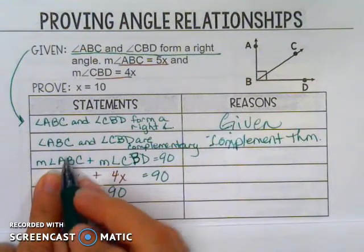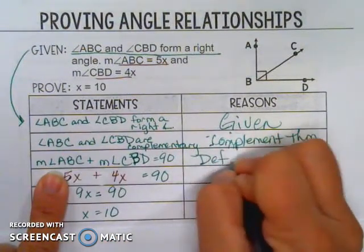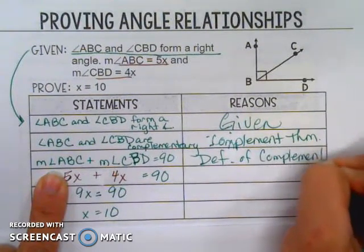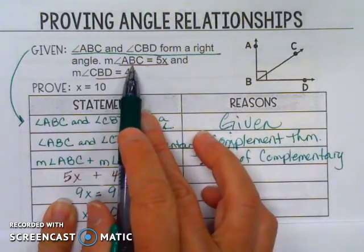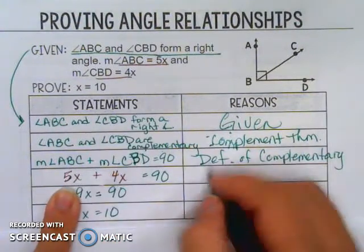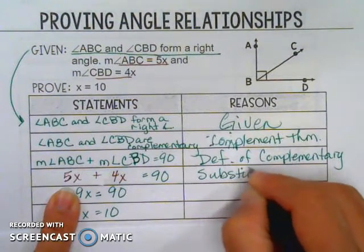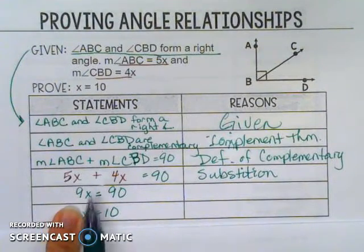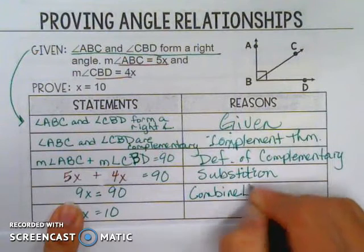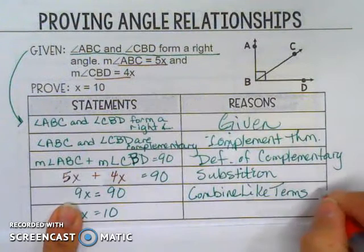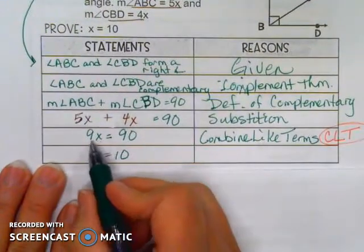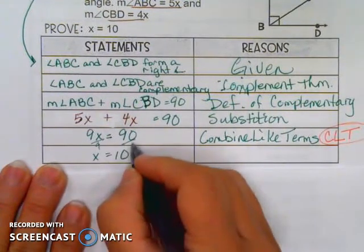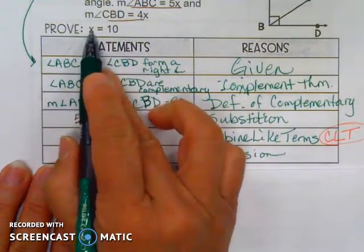This next step uses the definition of complementary: if they're complementary, they add up to 90 degrees. Then I can take that statement — because we're told the measure of angle ABC is 5x and the measure of angle CBD is 4x — and make a substitution. Remember, you need to write out 'substitution.' Then if I take 5x plus 4x and combine them to get 9x, that's combining like terms — you can write CLT as a shortcut. Then by the Division Property, dividing both sides by 9, that proves x equals 10.